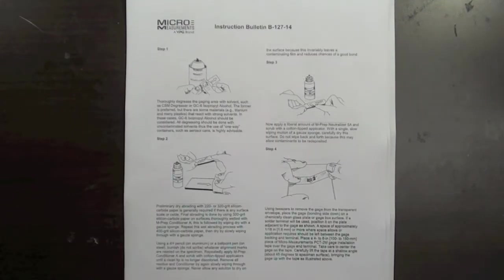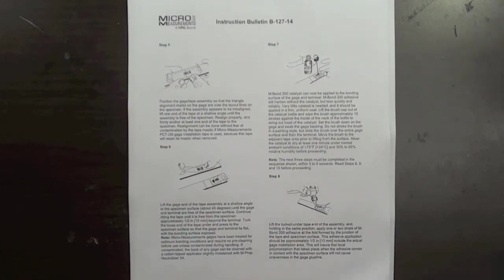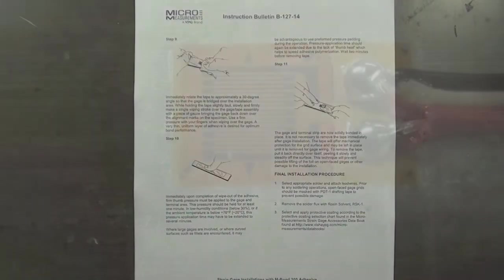A series of well-established, time-tested instructions are followed when bonding strain gauges. These include surface preparation, gauge handling, bonding with an adhesive, and attaching lead wires.